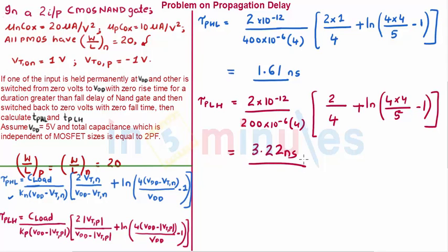So low to high propagation delay is 3.22 nanoseconds, and propagation delay high to low is 1.61 nanoseconds. And we know that here the effect of PMOS is present, and PMOS are slower, so this delay has to be a higher value compared to this, because here the effect of NMOS is present.